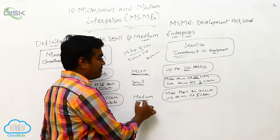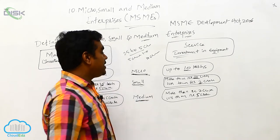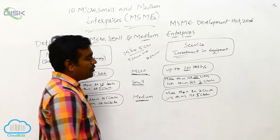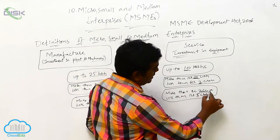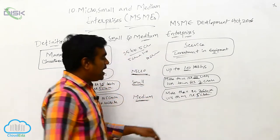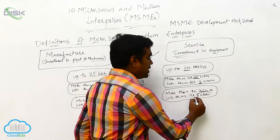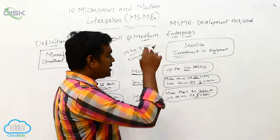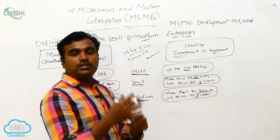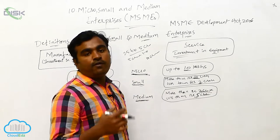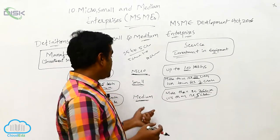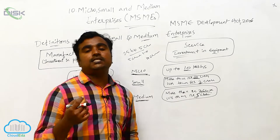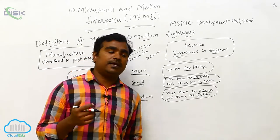Medium service enterprises are those where the investment in equipment is more than 2 crores and less than 5 crores. If the investment is between 2 crores and 5 crores, it is called a medium enterprise.